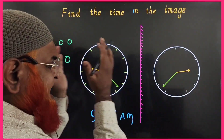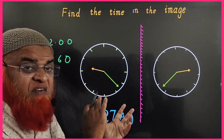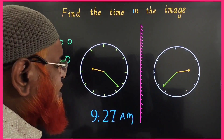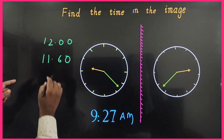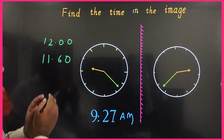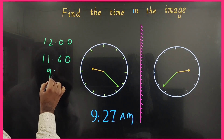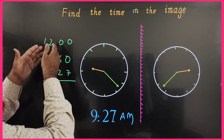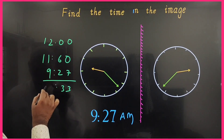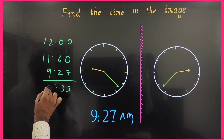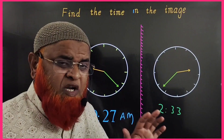How to find the time shown in the image of a clock when the object time is 9:27 AM? Because of lateral inversion in a mirror, use the method: write 12 hours as 11 hours 60 minutes, then subtract the given time. 11:60 minus 9:27 gives 2:33. So the clock image shows 2:33.